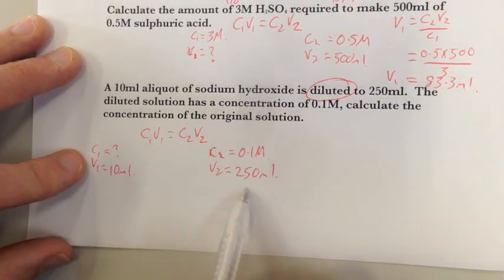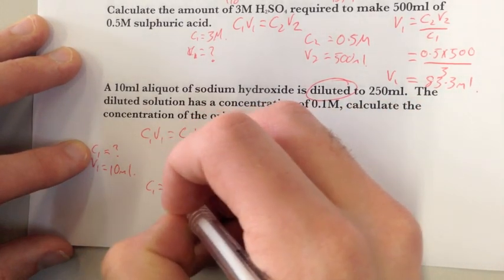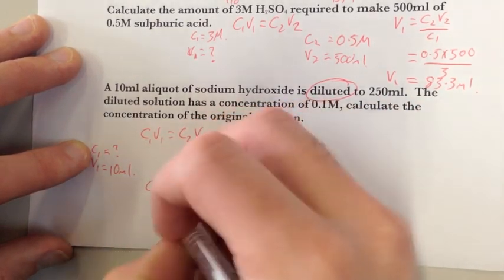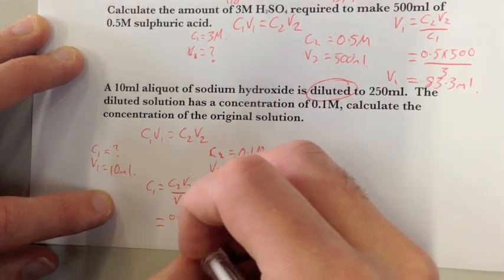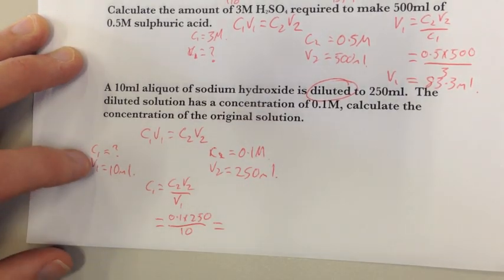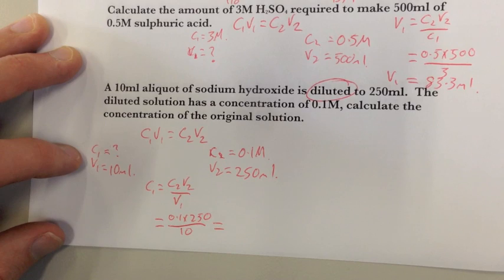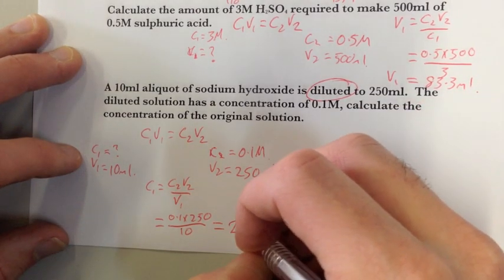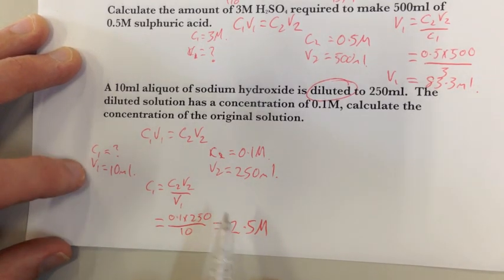Now I have all my values in here. I can rearrange to make C1 the target. So C1 equals C2V2 over V1. So therefore it equals to 0.1 times 250 divided by 10, which equals 2.5 molar. So my original solution had a concentration of 2.5 molar.